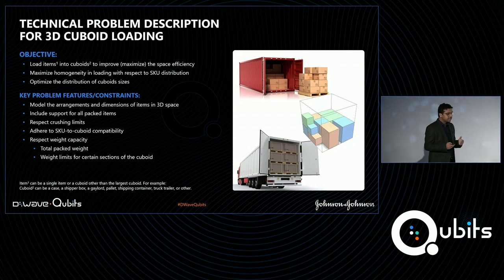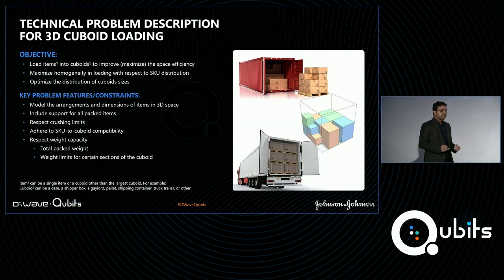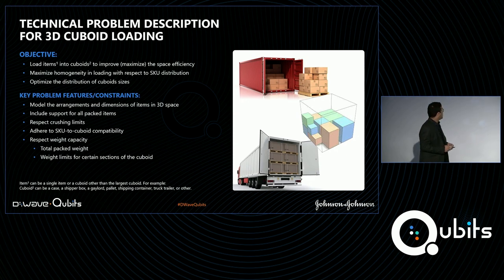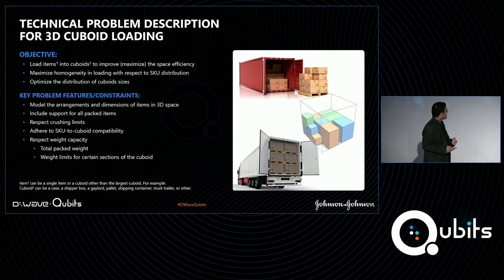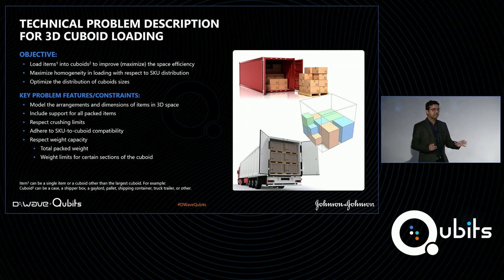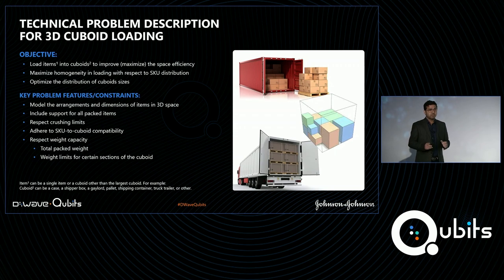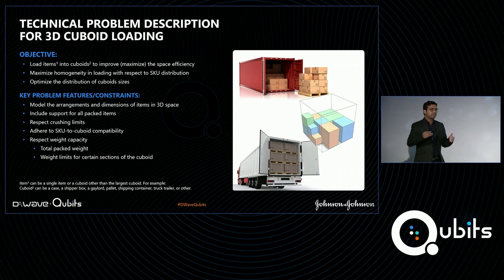In terms of constraints, in the base model we model the arrangement and dimensions of items in 3D space. We also have practical constraints: sufficient area support for all loaded items so nothing is hanging in air, weight crushing limits for each item as a function of the material SKU, SKU-to-cuboid compatibility constraints where specific SKUs can only go into specific cuboid sizes, and weight capacity constraints both for the cuboid as a whole and for certain sections to ensure weight balancing — so the cuboid is not front-loaded, back-loaded, or unevenly weighted.